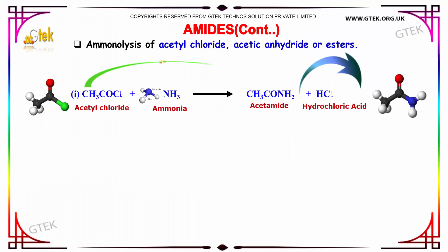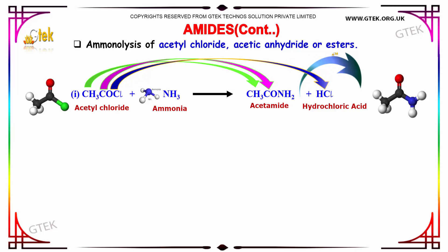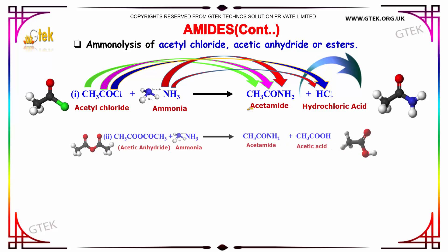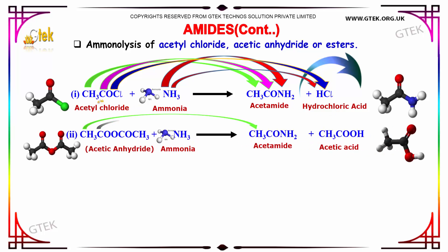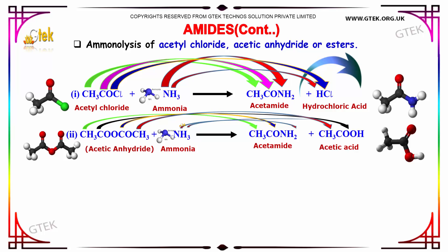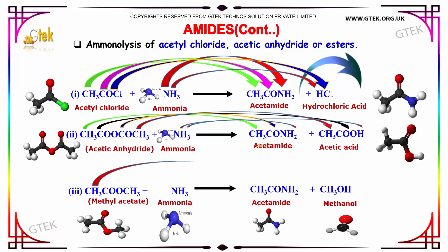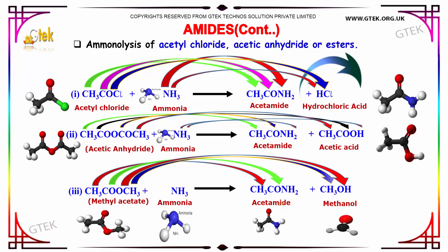Ammonolysis of Acetyl Chloride, Acetic Anhydride, or Esters produces Acetamide along with Hydrochloric Acid. That is, CH₃COCl when reacted with NH₃ produces Acetamide. Even Acetic Anhydride when reacted with Ammonia produces Acetamide. Similarly, when Methyl Acetate is made to react with NH₃, it produces Acetamide along with Methanol.